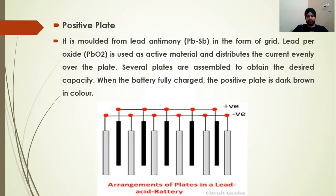Always remember that the positive plate contains lead peroxide. Several plates are assembled together to obtain the desired capacity. For example, for 50 ampere-hour capacity more plates are needed, and for 40 ampere-hour fewer plates are needed. The plates are connected in series. When the battery is fully charged, the positive plates are dark brown in color.